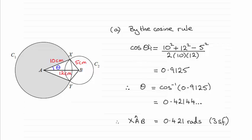I'm assuming you're familiar with the cosine rule here for an angle. If not, do check out the videos on my website. The cosine of an angle is equal to the two adjacent sides squared and added together, then you subtract the square of the opposite side to the angle, which is the 5, and then you divide by twice the product of the two adjacent sides.